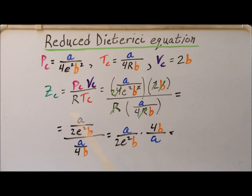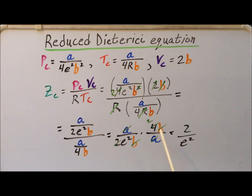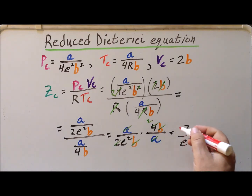Then we use the properties of fractions: dividing by a fraction is the same as multiplying by the reciprocal. So that gives us A over 2e²B times 4B over A. Canceling A's with A's and B's with B's, and 4 with 2 to give a 2 in the numerator, gives us that the critical compression factor for the Dieterici gas is 2 divided by e².